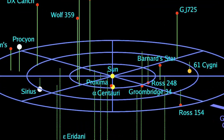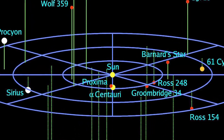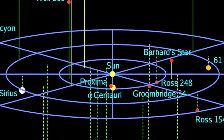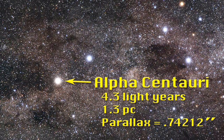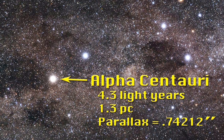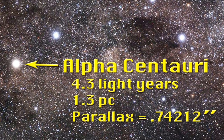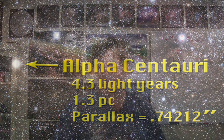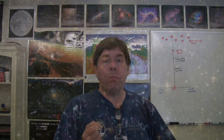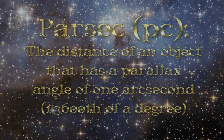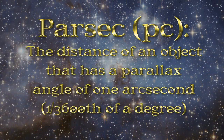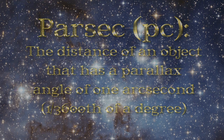Even for nearby stars, the parallax angle is very small. For example, Alpha Centauri, which is the nearest star system to us, has a parallax angle that's less than one arc second. For a star to have a parallax angle of one arc second, it would have a distance of 3.26 light years. In fact, that distance — 3.26 light years — is called a parsec, meaning it has a parallax angle of one arc second.